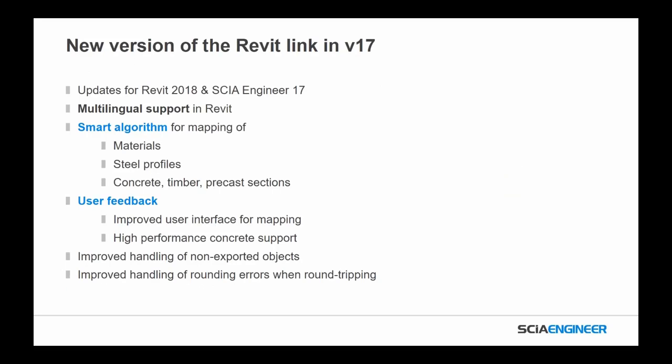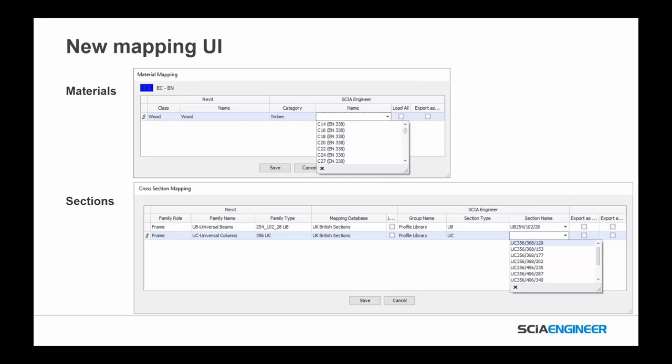We now have a new version of the Revit link, updated for support for Revit 2018 and SIA 2017. We now have multilingual support, a smarter algorithm for mapping of materials and steel profiles, and more dimensional cross-sections including concrete, timber, and precast sections. Based on user feedback, we improved the user interface for mapping, higher performance for concrete support, improved handling for non-exported objects, improved handling for rounding errors, and better round-tripping. The material mapping interface now has a much larger library, more robust and able to utilize the full depth of what we have in C Engineer.